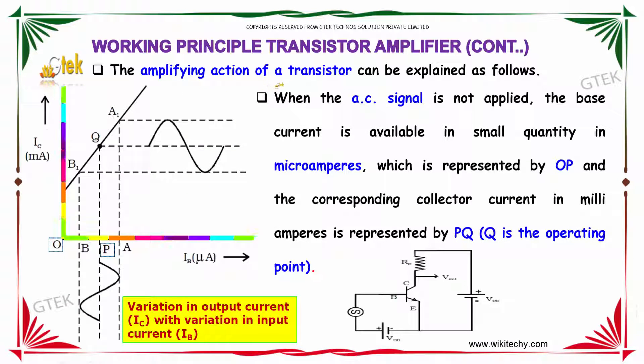The amplifying action of the transistor can be explained as follows. When the AC signal is not applied, the base current is available in small quantity in microamperes, which is represented by O and P.